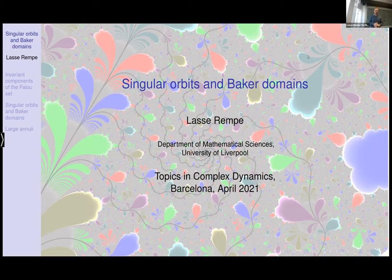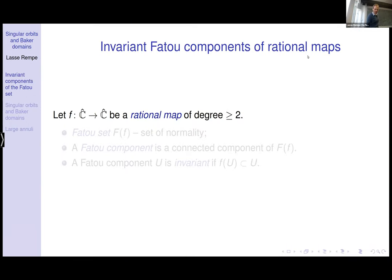The topic is singular orbits and Baker domains. Many people here know a lot about complex dynamics already, but I thought we'd try a gentle introduction — particularly for postgraduate students — because really anyone with an interest in complex dynamics ought to be able to understand the statements I'm talking about.